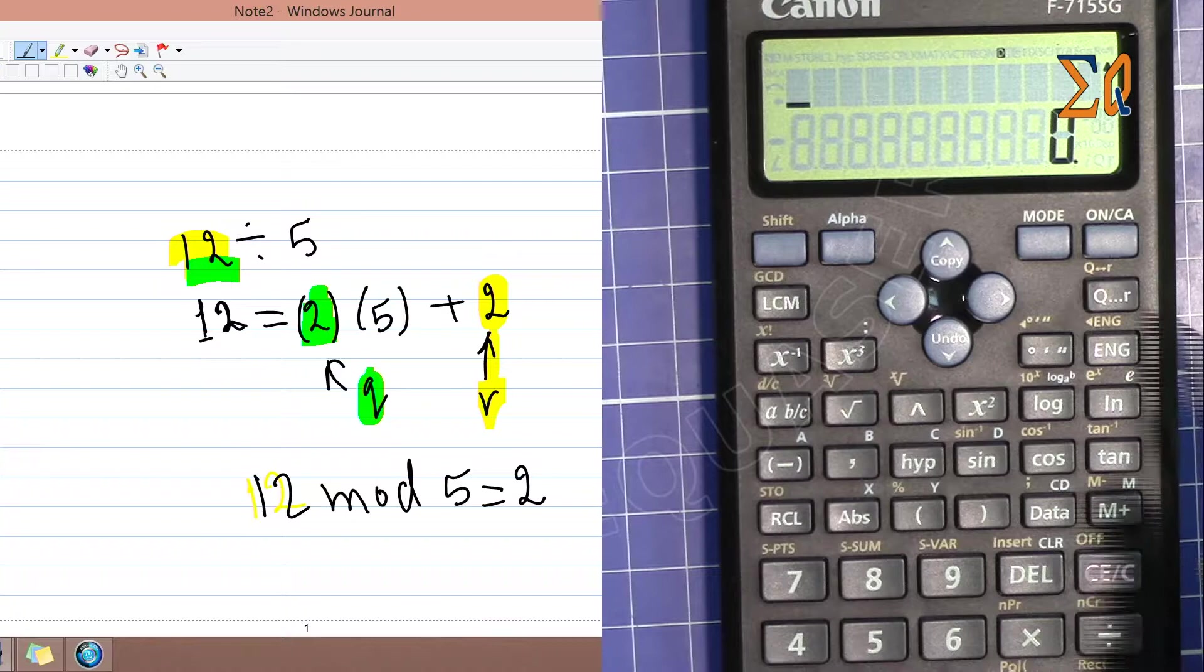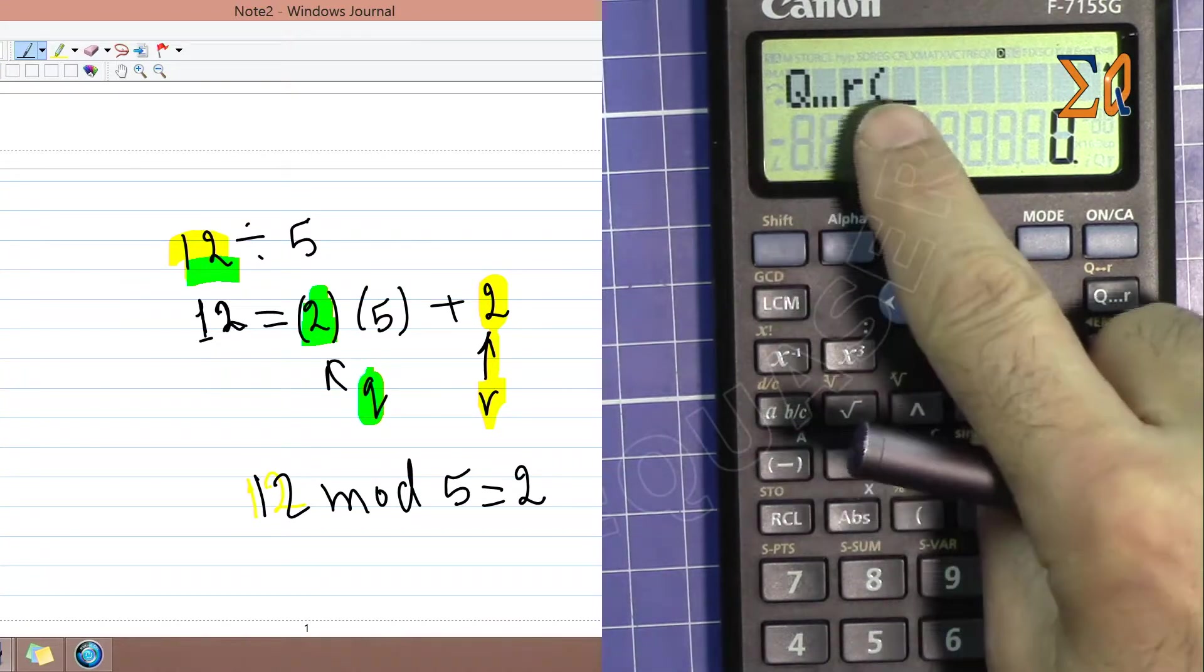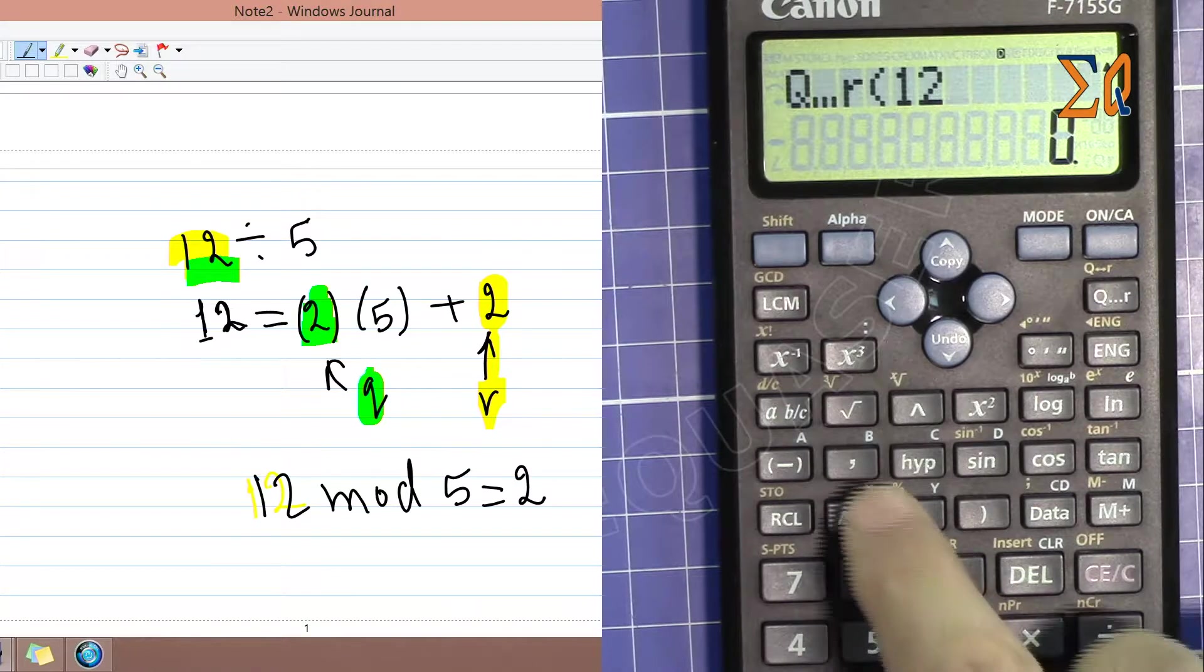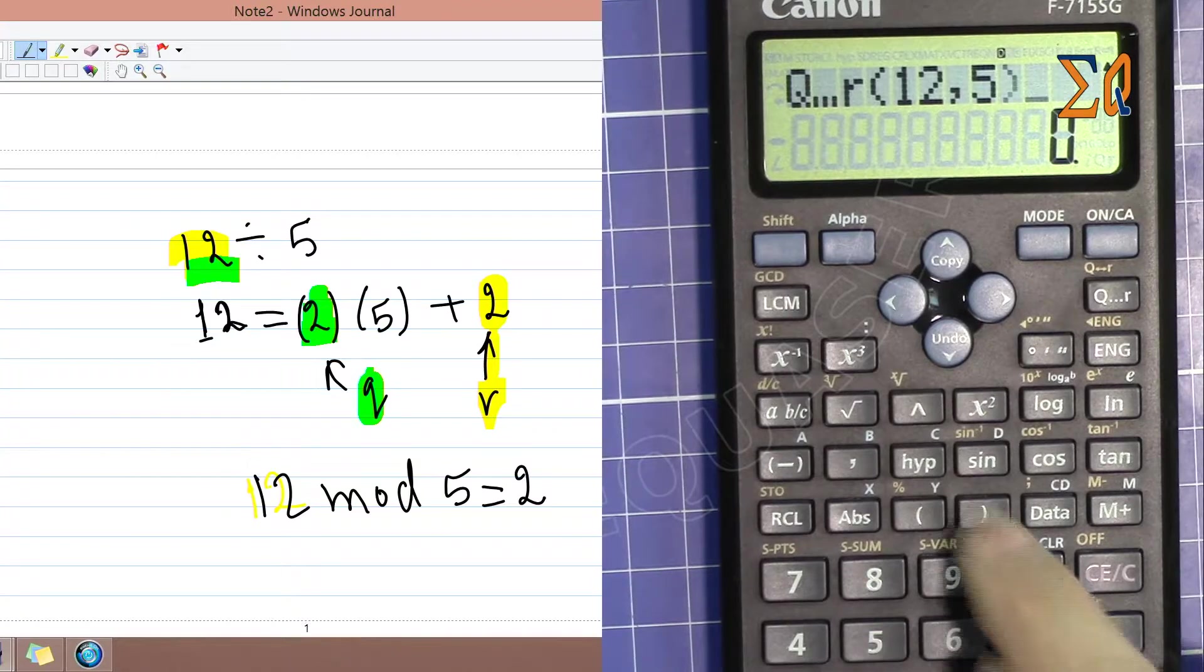To access quotient and remainder, press this button—you see Q and R on the screen. Enter 12, then press comma, then enter 5. Close it. When we enter, it says Q, and that is 2.